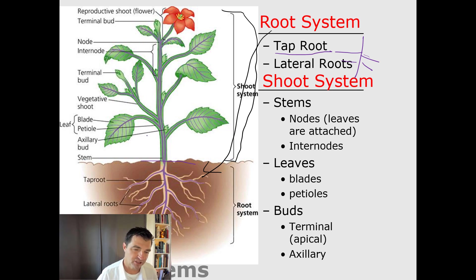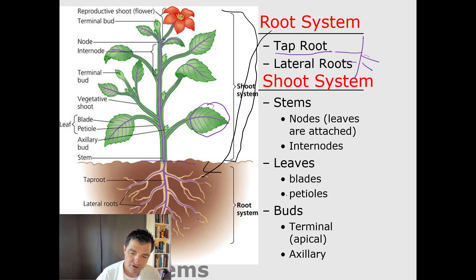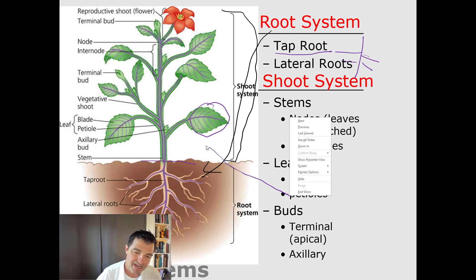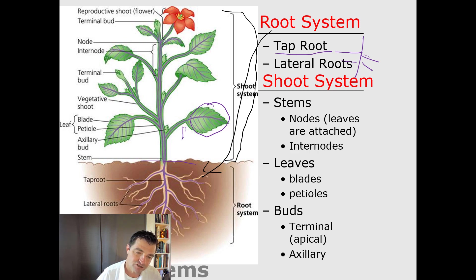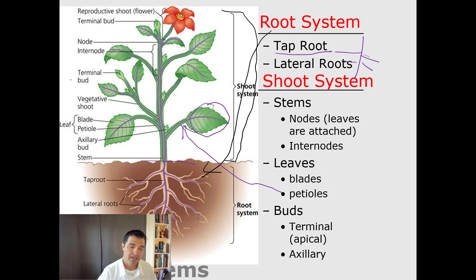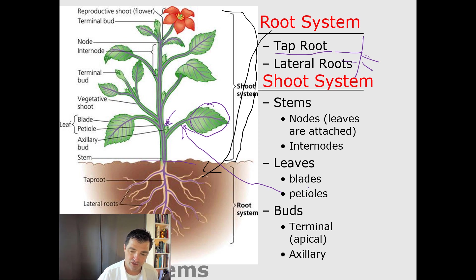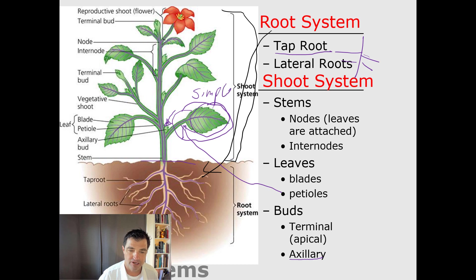The shoot system is typically the things above the ground or out of the soil. We have things like leaves, and also the petiole, which is where the leaf is connected to the blade of the leaf. We'll also talk about simple and compound leaves, defined in part by the axillary bud, which shows you where the new growth is.